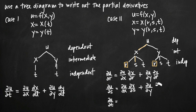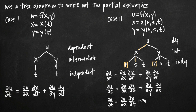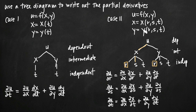For u with respect to s: the partial derivative of u with respect to x, multiplied by the partial derivative of x with respect to s, plus the partial derivative of u with respect to y, multiplied by the partial derivative of y with respect to s. For u with respect to t: the partial derivative of u with respect to x, times the partial derivative of x with respect to t, plus the partial derivative of u with respect to y, times the partial derivative of y with respect to t. That's how you use a tree diagram to outline chain rule partial derivatives for Case 1 or Case 2 functions.